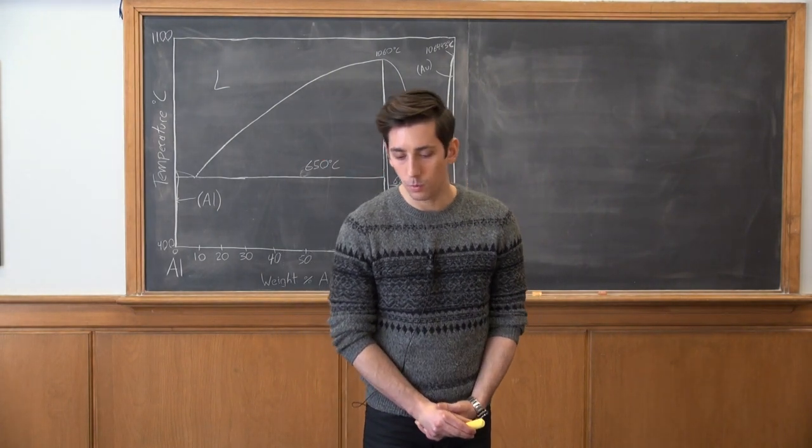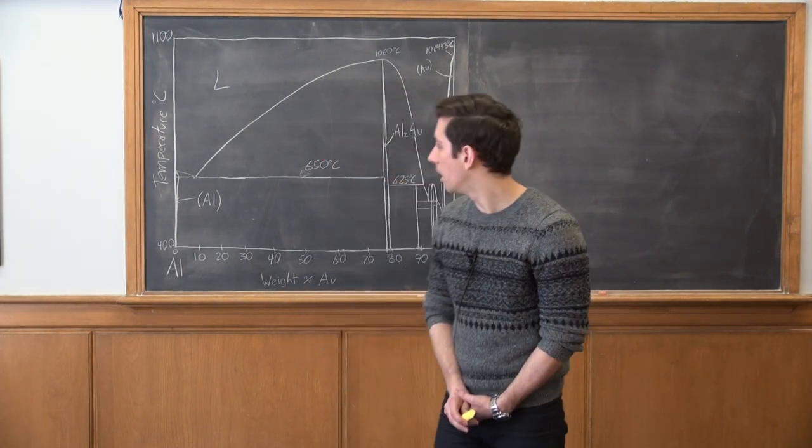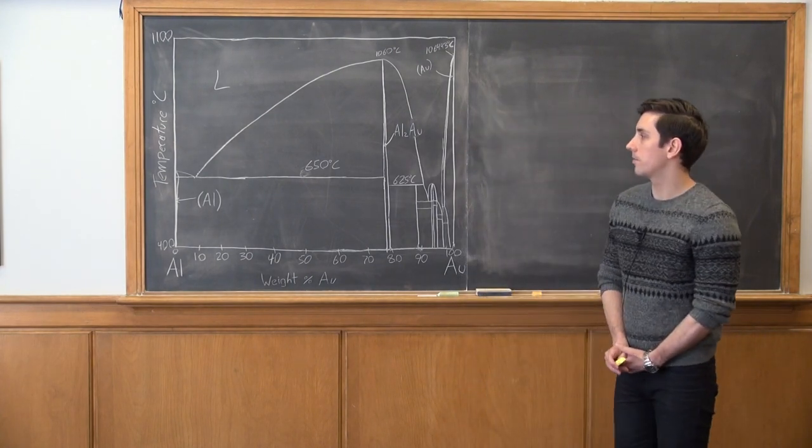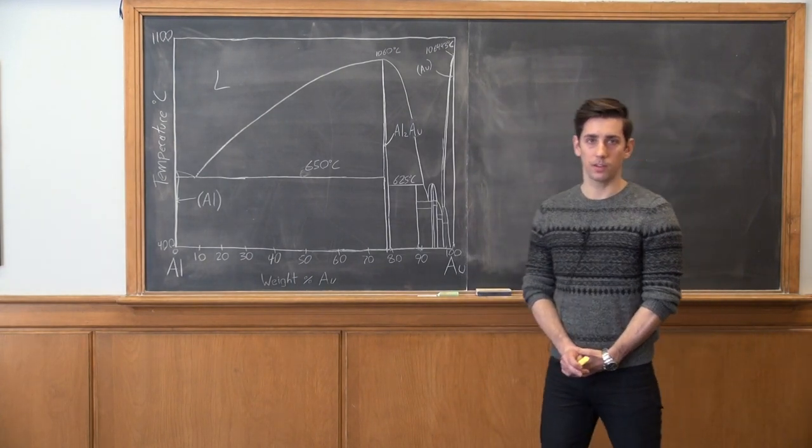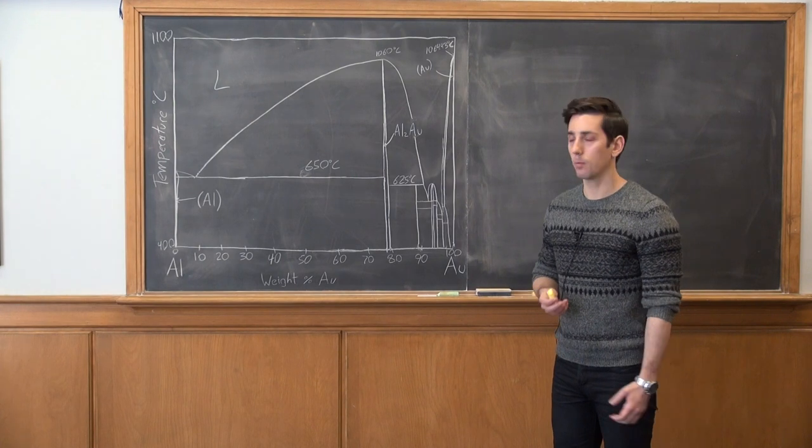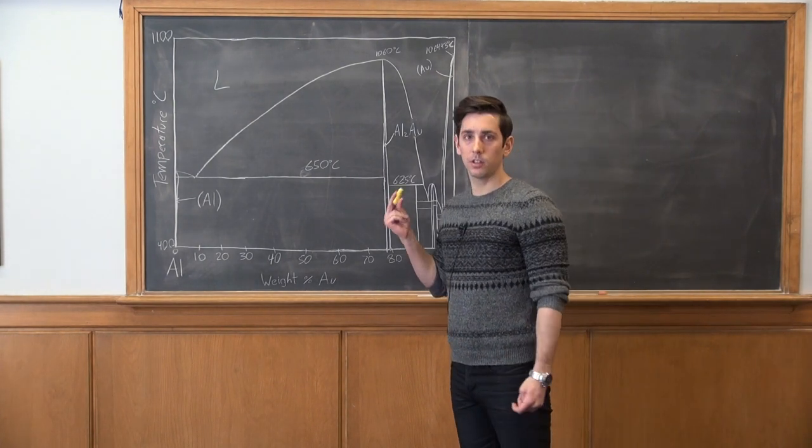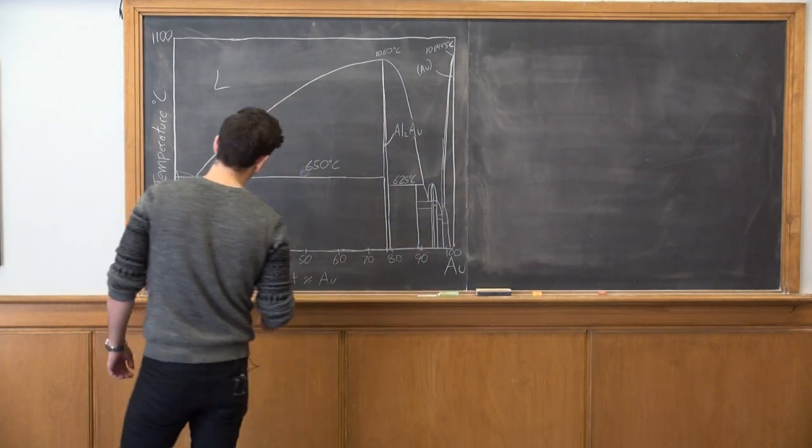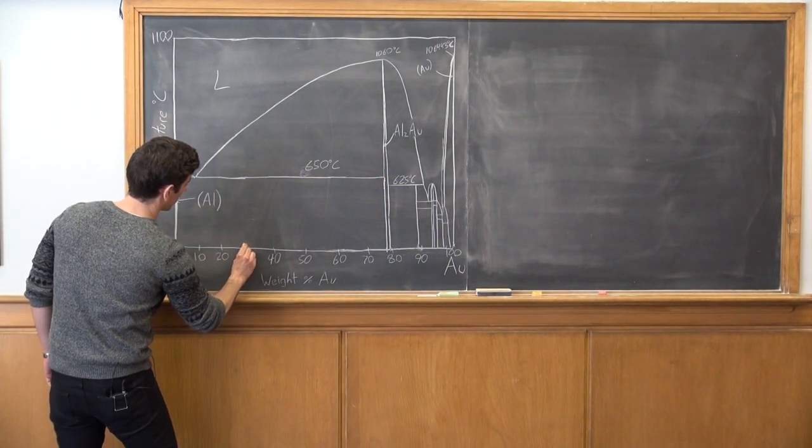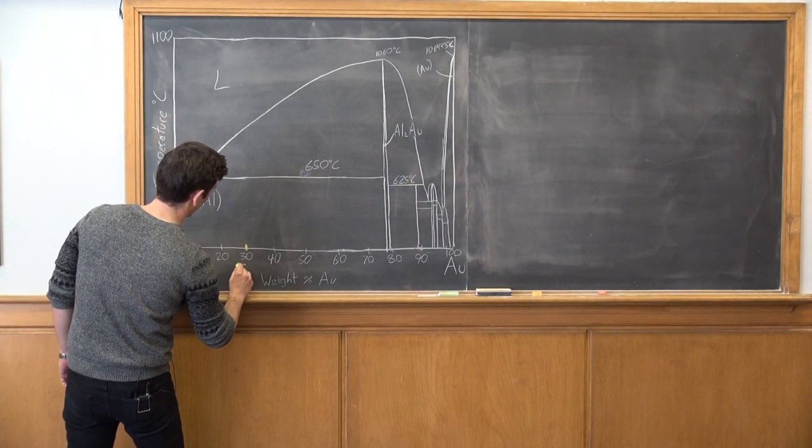Part A is what will the primary phase be? So this is the equilibrium phase diagram here. Our first step is to figure out which region of the phase diagram we're in. Let's start with the alloy composition. We know that the overall composition is 30% gold, so I'm going to mark this point here and label it C0.